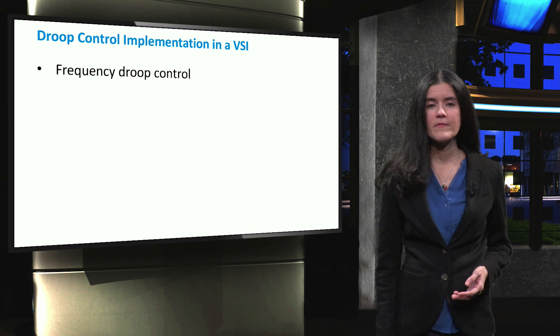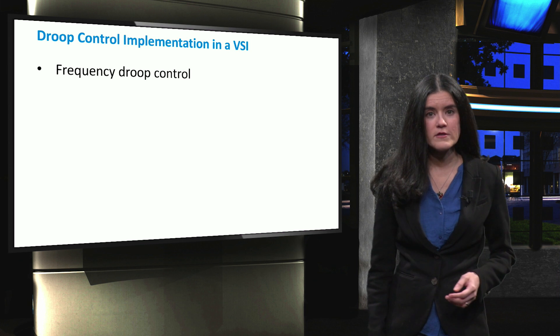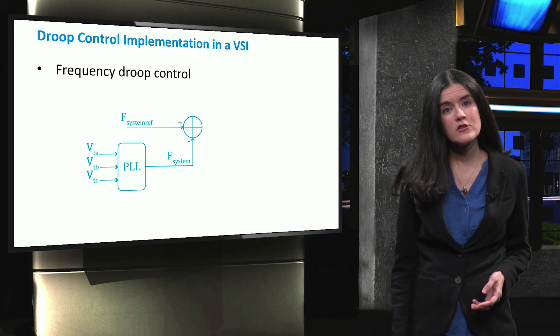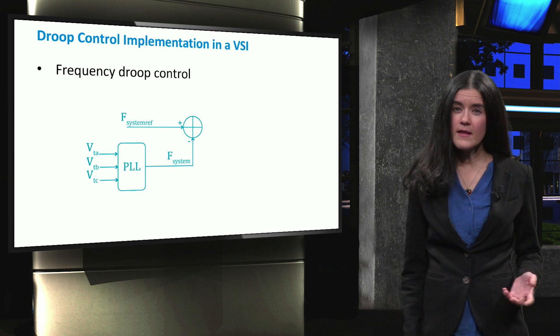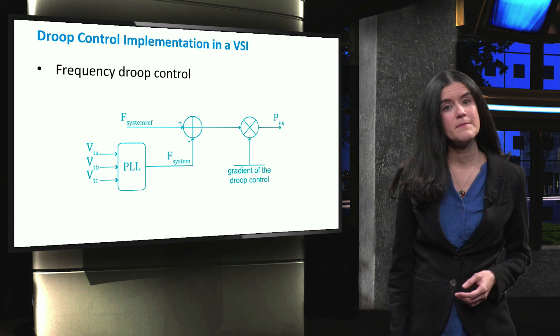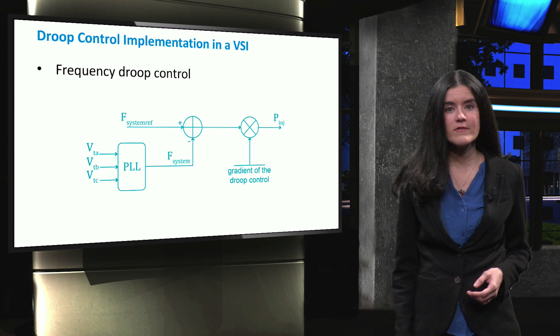In a conventional scheme, frequency droop can be straightforwardly implemented in a voltage source converter. First, the actual frequency of a microgrid is measured by a phase-locked loop, often referred to as PLL, and then this value is compared with a nominal frequency. The frequency mismatch will be translated into power changes according to the gradient of the droop control.